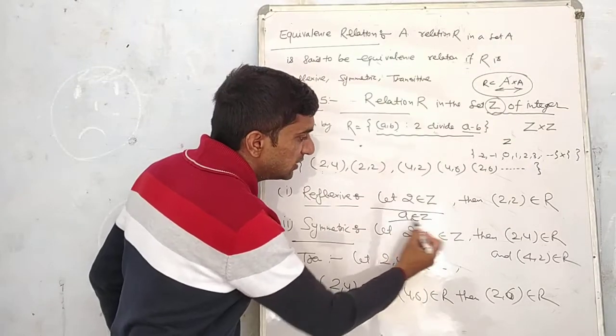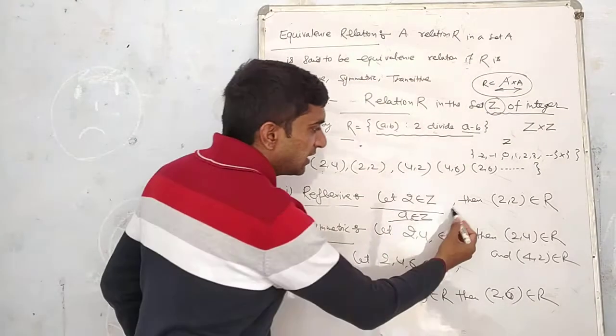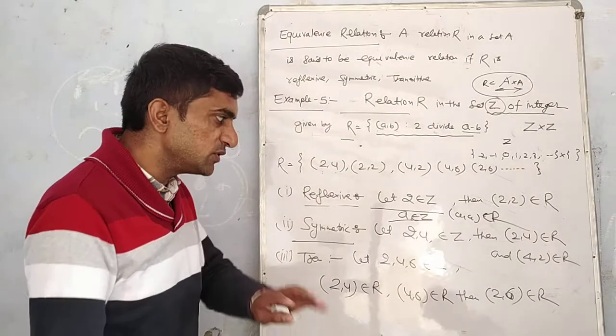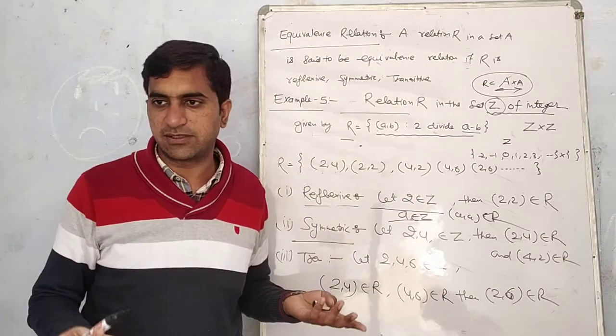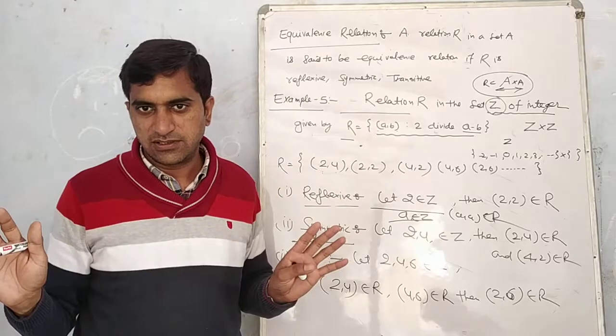For example, if you have A1 belongs to Z, then what should happen? A1 R A1 must be true. Yes. You can write it in examples. But if you understand it conceptually, it will be better.